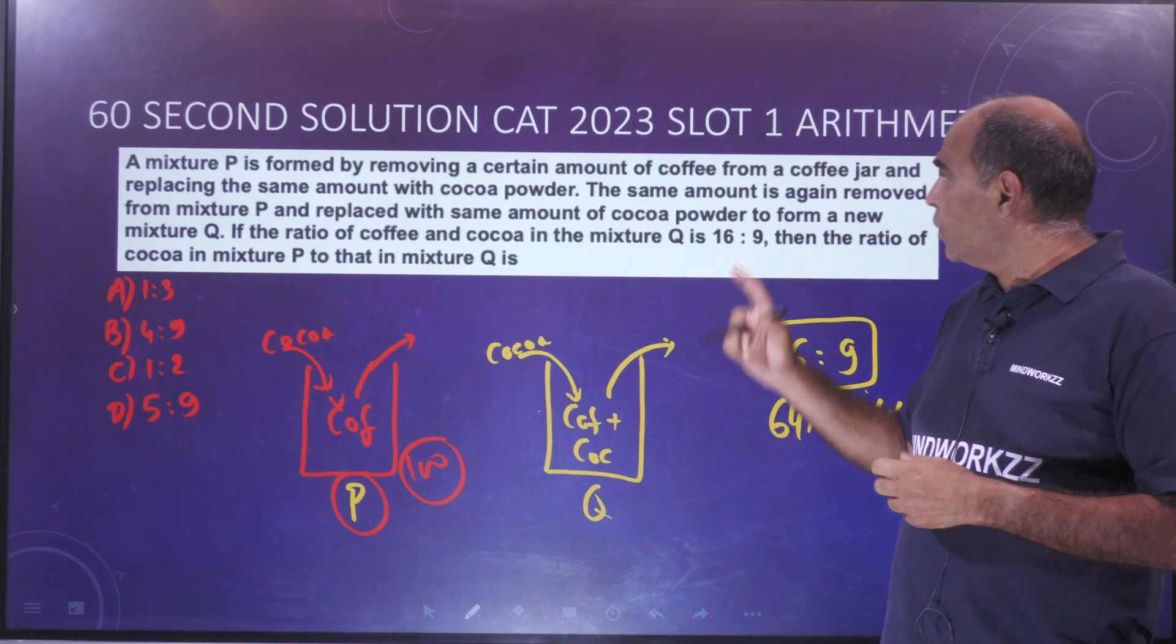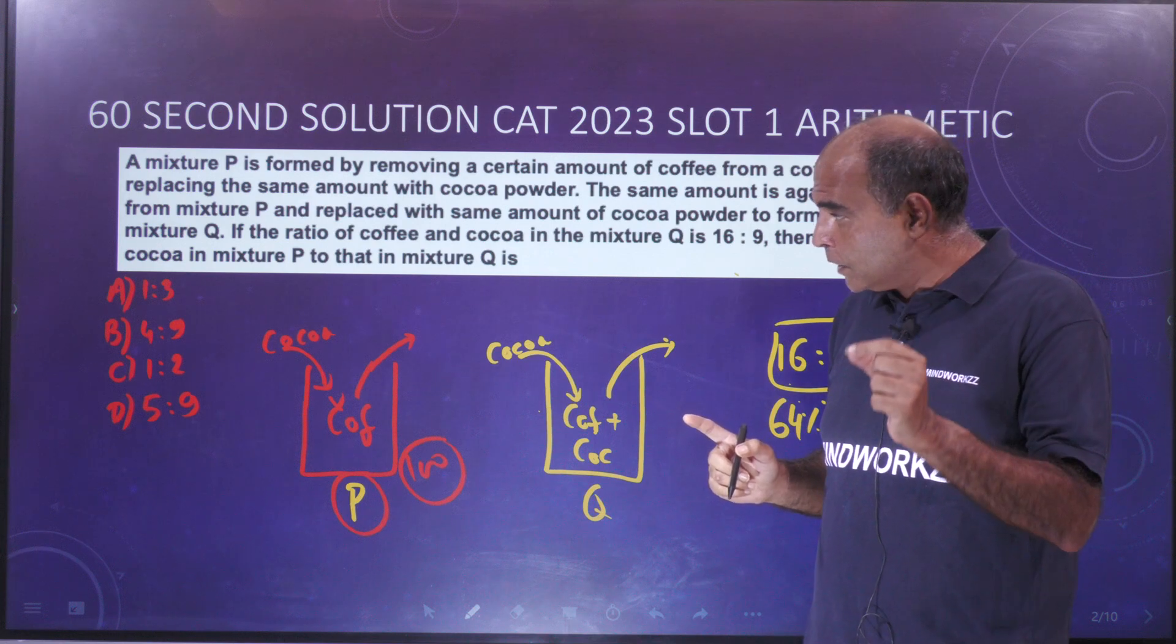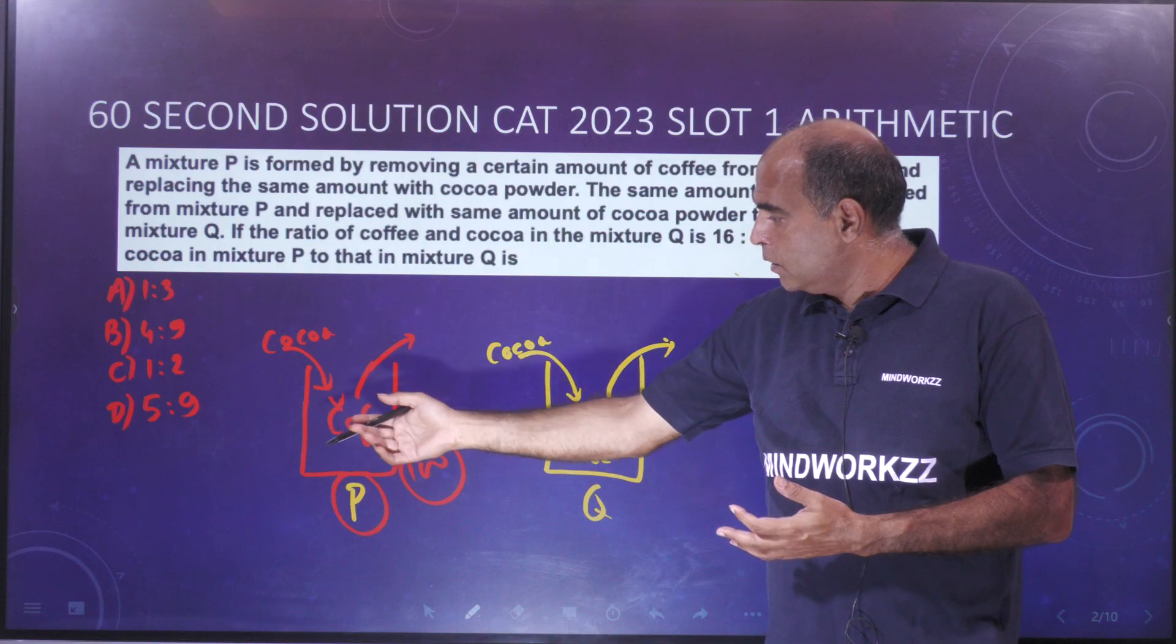Hey guys, back with the 60 second solution CAT 2023 slot 1 arithmetic. You see this in one thought if you get that thought. Mixture P is formed by taking out coffee from a coffee jar and putting cocoa in.